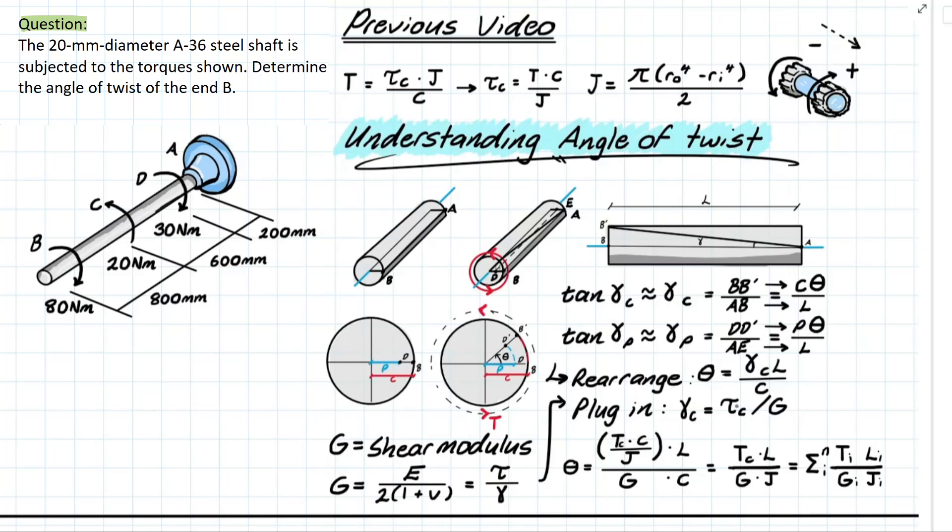Plugging it into here which will leave us with a formula that looks like this. And breaking it down and simplifying it a bit more cancelling out the c's you're left with an angle of twist formula that looks like this.